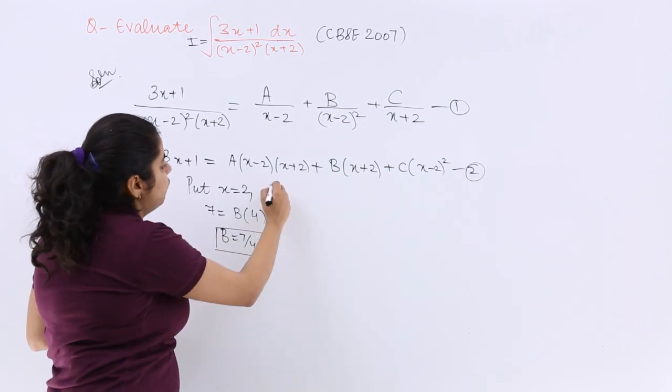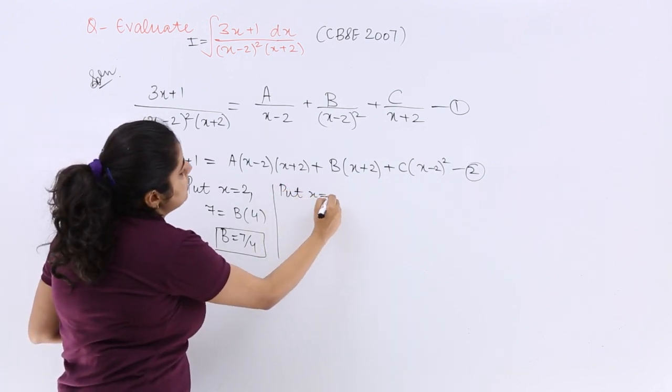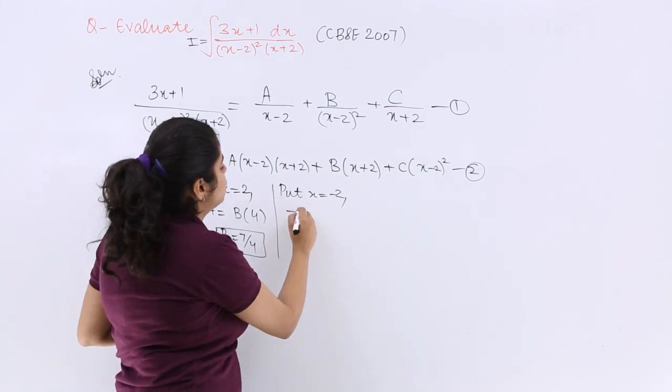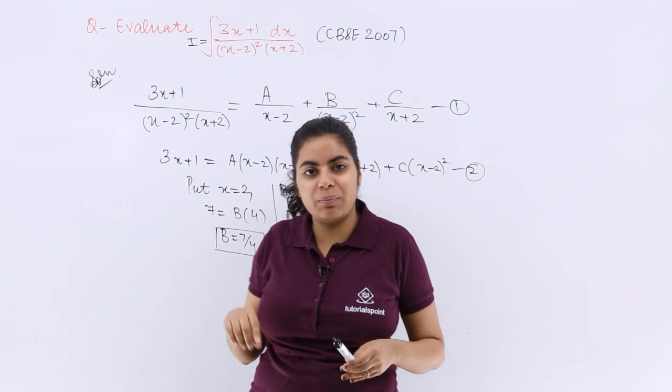Now let me see for other cases. If I put x equals minus 2, what happens? It is minus 6 plus 1 which is minus 5, as you can see, 3 multiplied by minus 2. Then minus 2 plus 2 goes away vanishes.